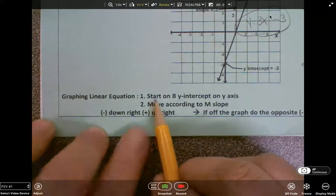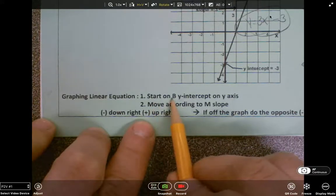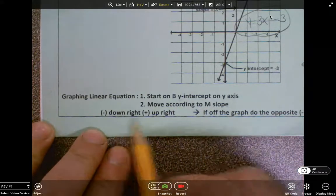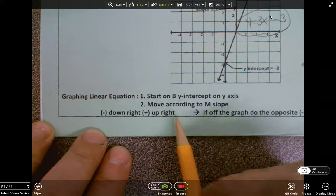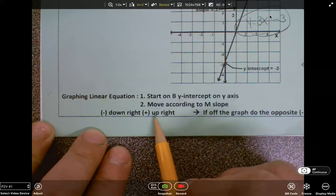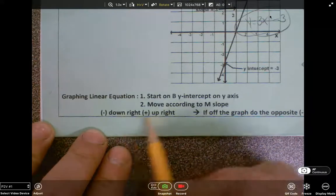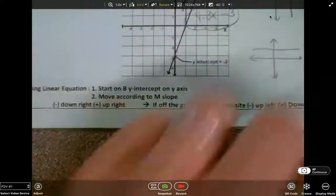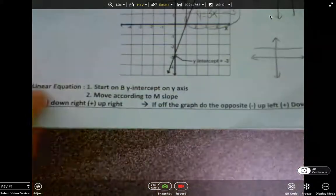And then if you're graphing it, you do the same thing. You start on the b, which is your y-intercept, and move according to the slope. If it's positive, you're going to go up and to the right, and if it's negative, you'll go down and to the right. And if it goes off the graph, remember, you have to do the opposite.